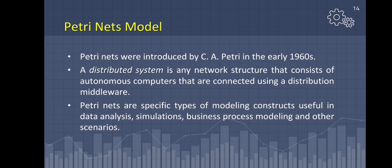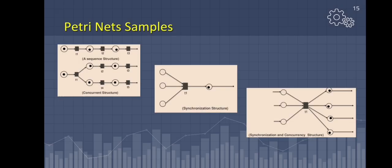Petri nets describe complex procedures and model the workings of a system using elements such as places, transitions, and gates. Petri nets have numerous technological applications. One prominent application of Petri nets is in business process analysis. Here are some examples of the different kinds of Petri nets models.